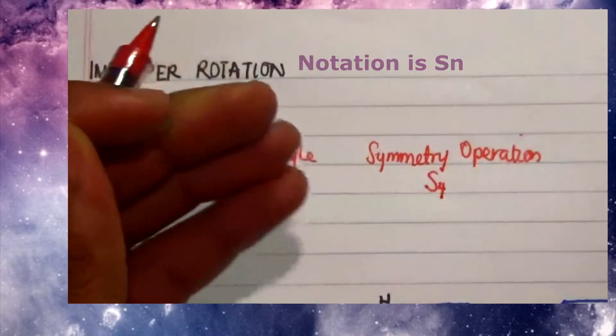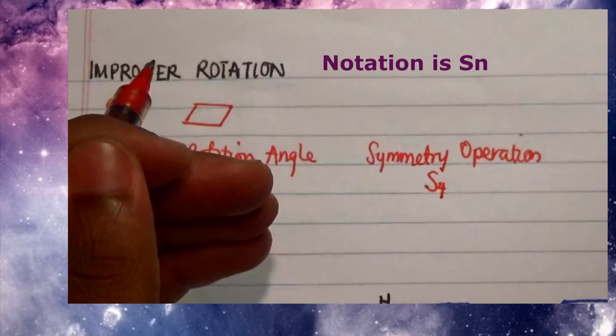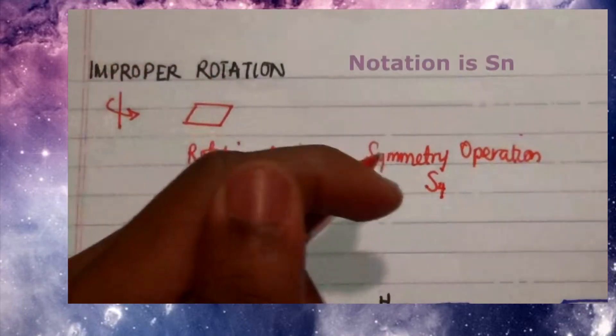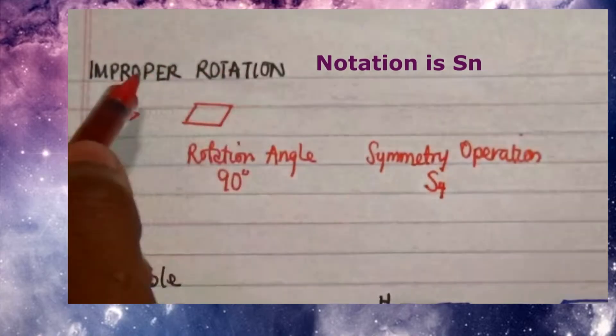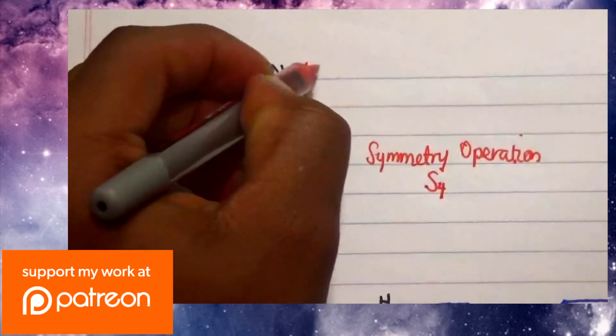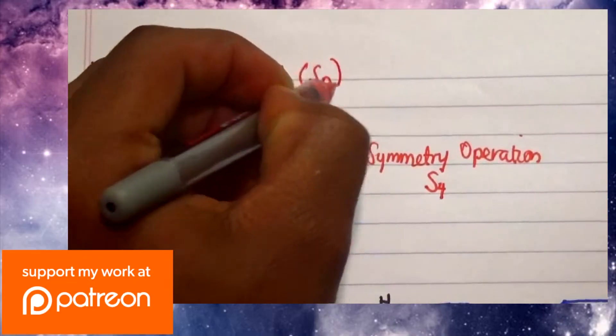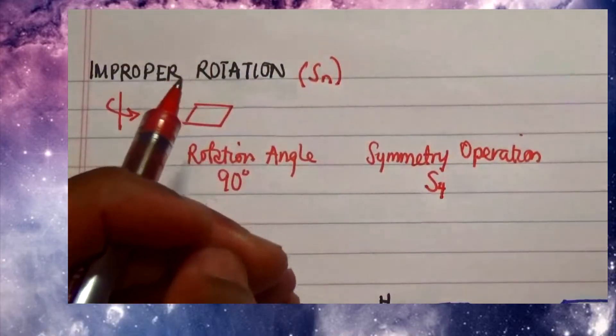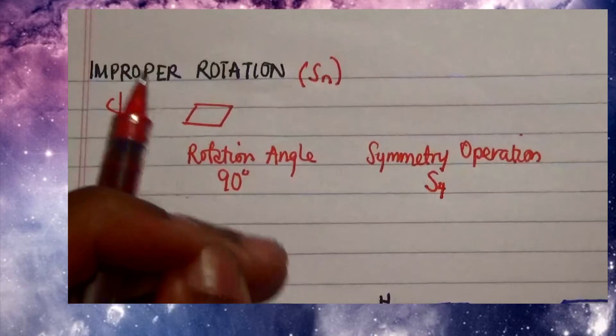S4 meaning that I perform a C4 rotation and then I apply a mirror plane that is perpendicular to that particular rotation. So improper rotation has a symbol which is SN, where N is the rotational number that is applied to that particular molecule.